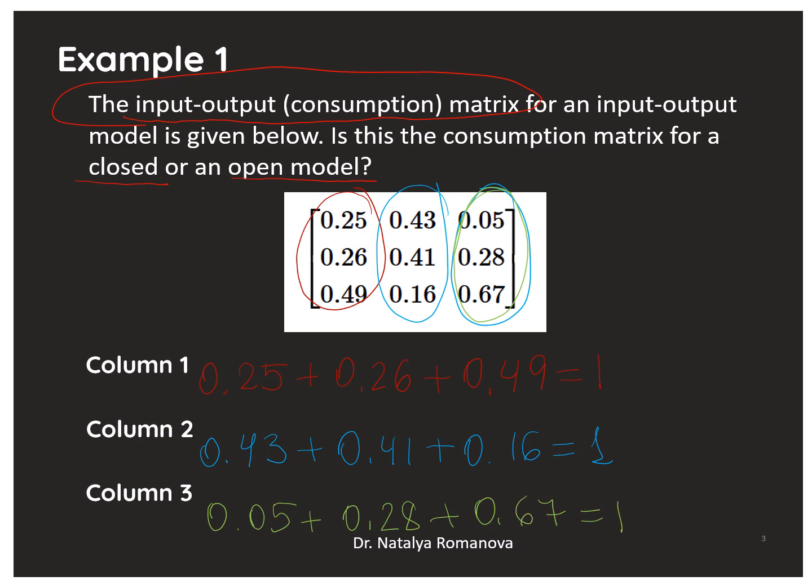Each column sums to 1. There is no separate final demand vector. All output is absorbed within the system. This is an Input-Output Matrix for a Closed Leontief model. Answer: closed.